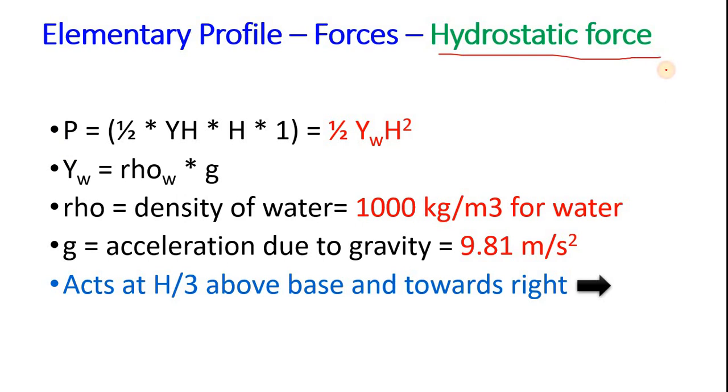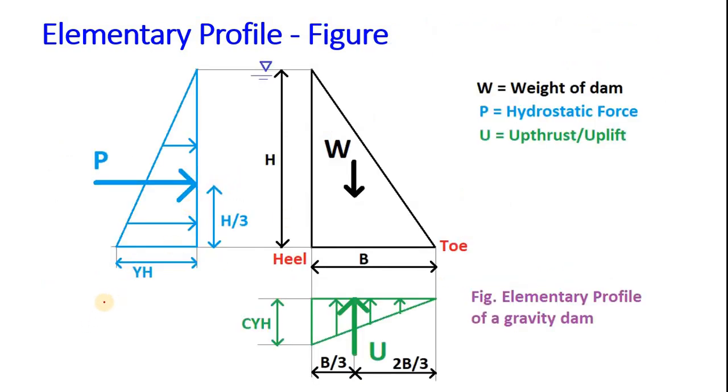Let's see first hydrostatic force. We know pressure is given by gamma into H. If from the free surface this is depth H1, then pressure at this point would be gamma into H1. Gamma is equal to rho g. Rho means density and g means acceleration due to gravity. Now to calculate the force we need to find the area of this triangle, which is 1 by 2 into base. Base is gamma into H into height. Height in this case is H. So we get 1 by 2 gamma H square. And this gamma is of water because force is due to water.